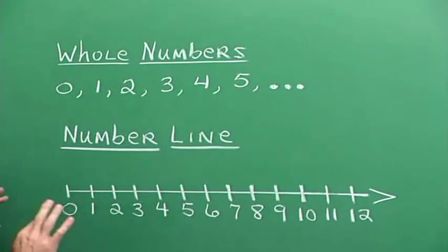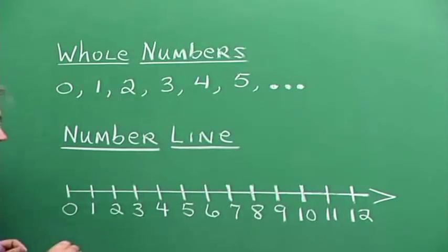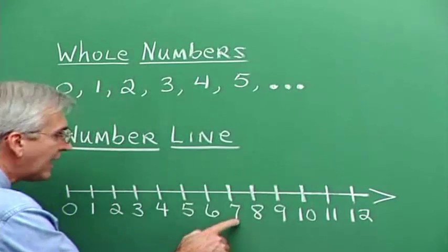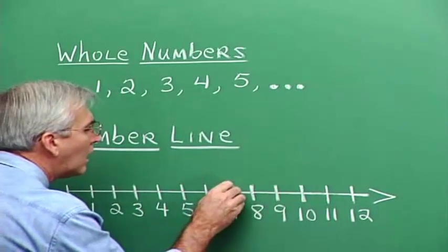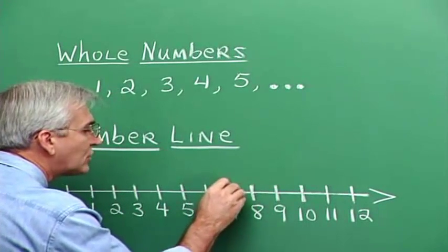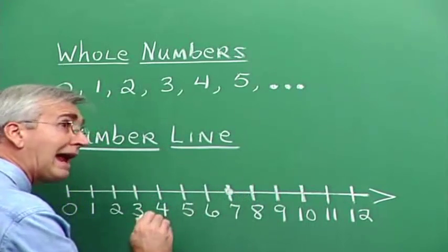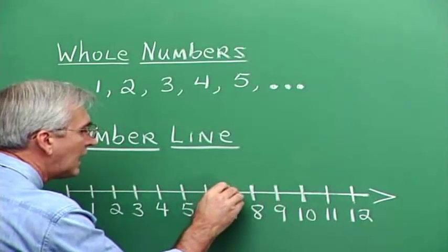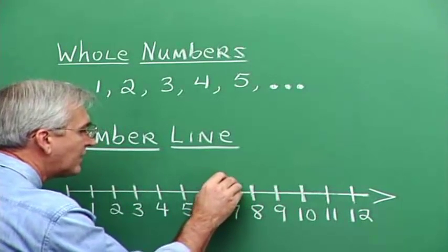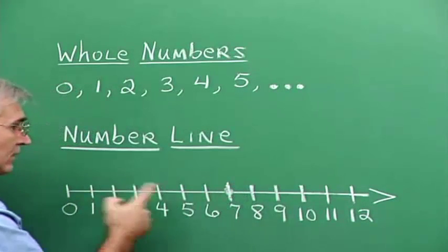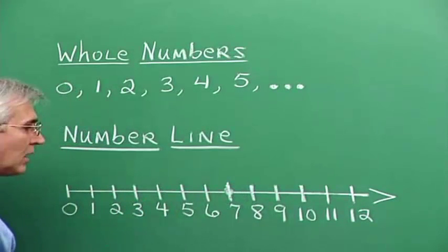When we locate a number on a number line — let's say we want to locate seven — here's seven. And if we make a dot at seven, we are constructing the graph of seven with the dot. And this seven is telling us that we are seven units from zero along the number line.